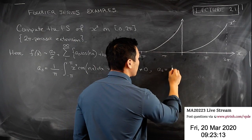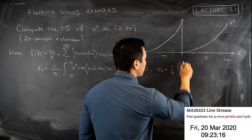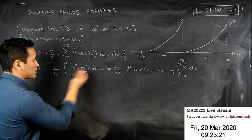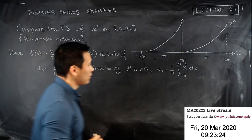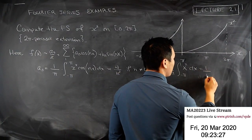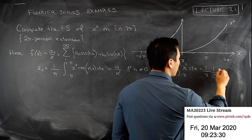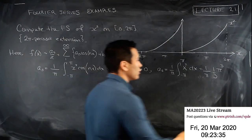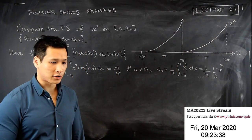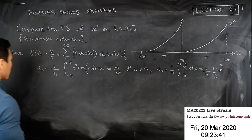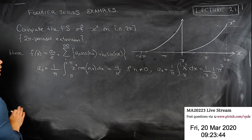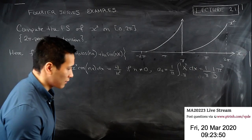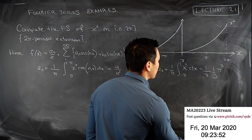We've computed the aₙ case; let's compute a₀. So a₀ is 1 over π, the integral from minus π to π of x² dx. You'd simply set cosine of 0 to 1, giving 1 over π times (1/3)π³. So a₀ is computed. Now we have to compute bₙ — this is a bit of a long calculation. I want to erase some of this because I'll be using the bₙ calculation again when I compute the odd extension.